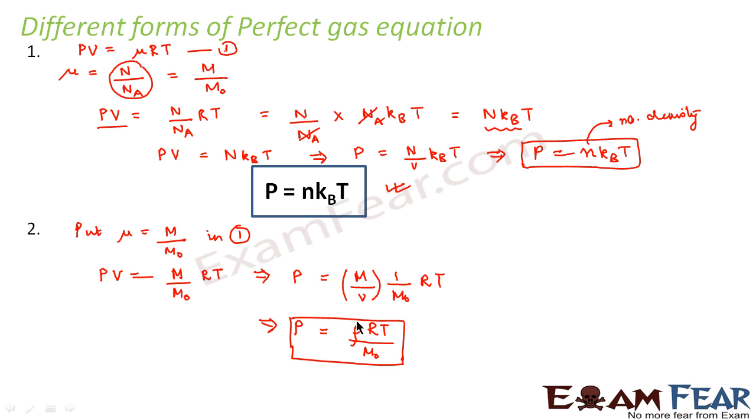So what is ρ? This ρ is nothing but mass density of the gas. So one equation was in terms of number density, that is number of molecules per unit volume. The other one is in terms of mass density, that is mass of the gas per unit volume. So this was my second form of the ideal gas equation.